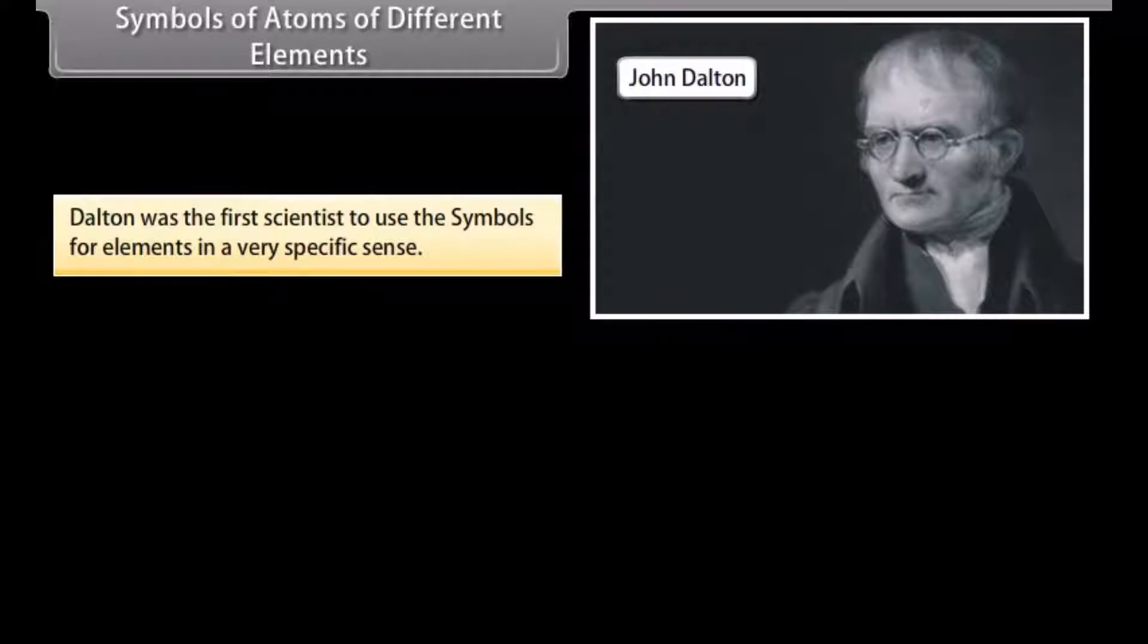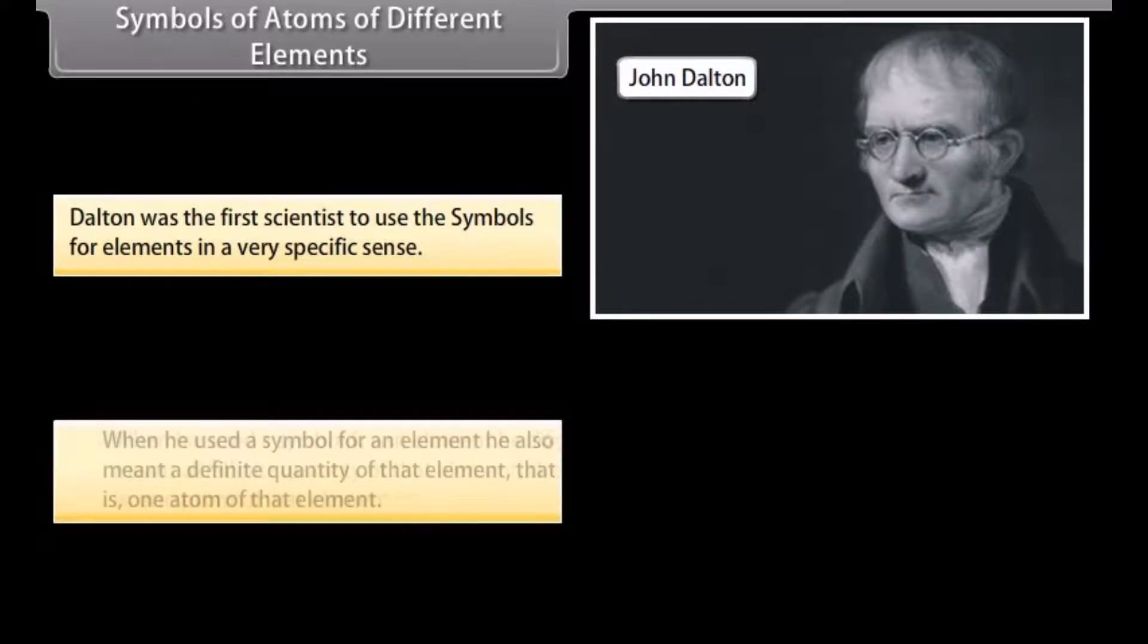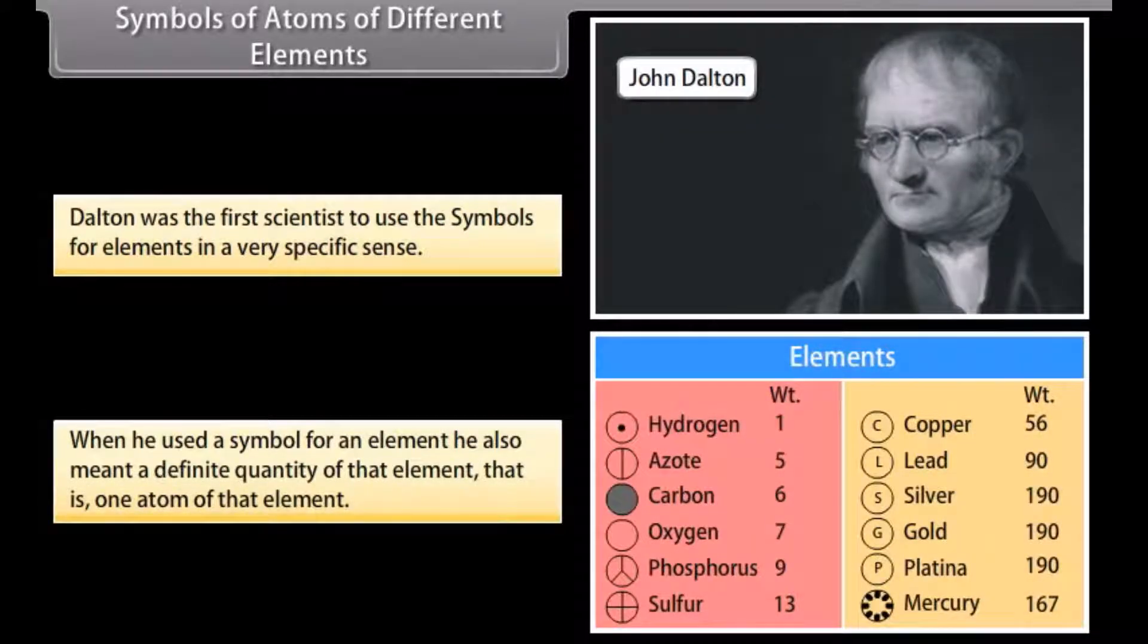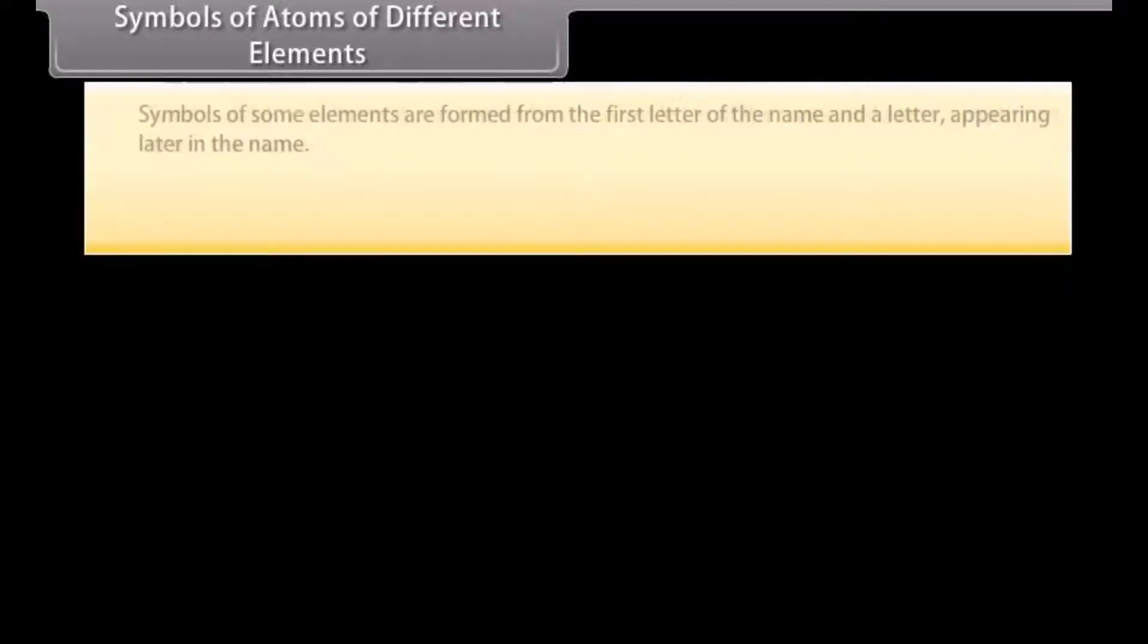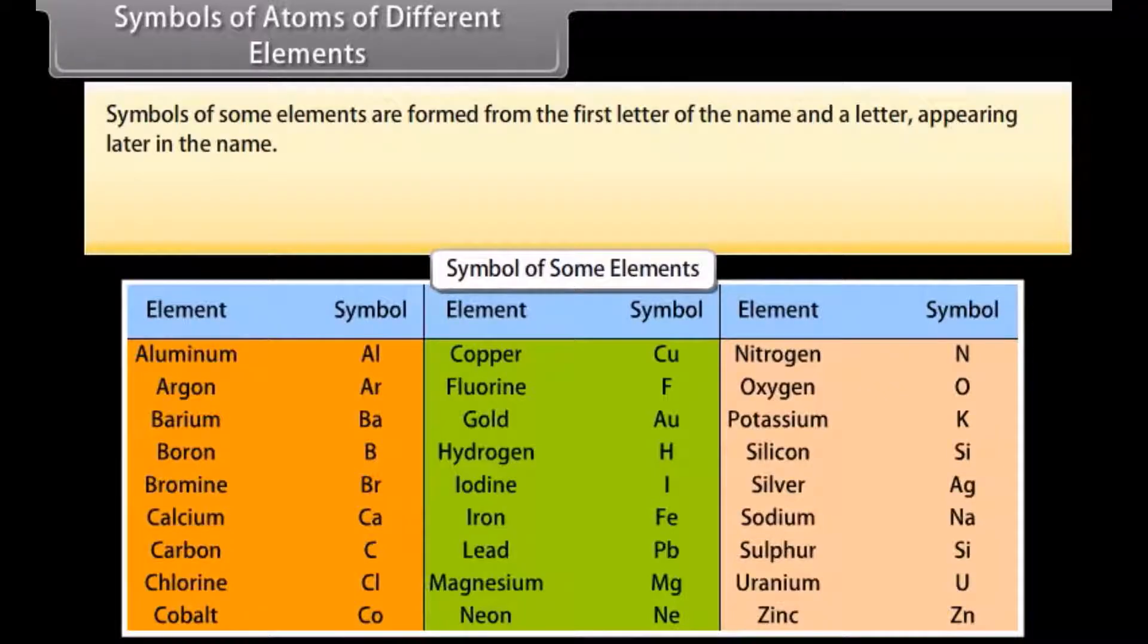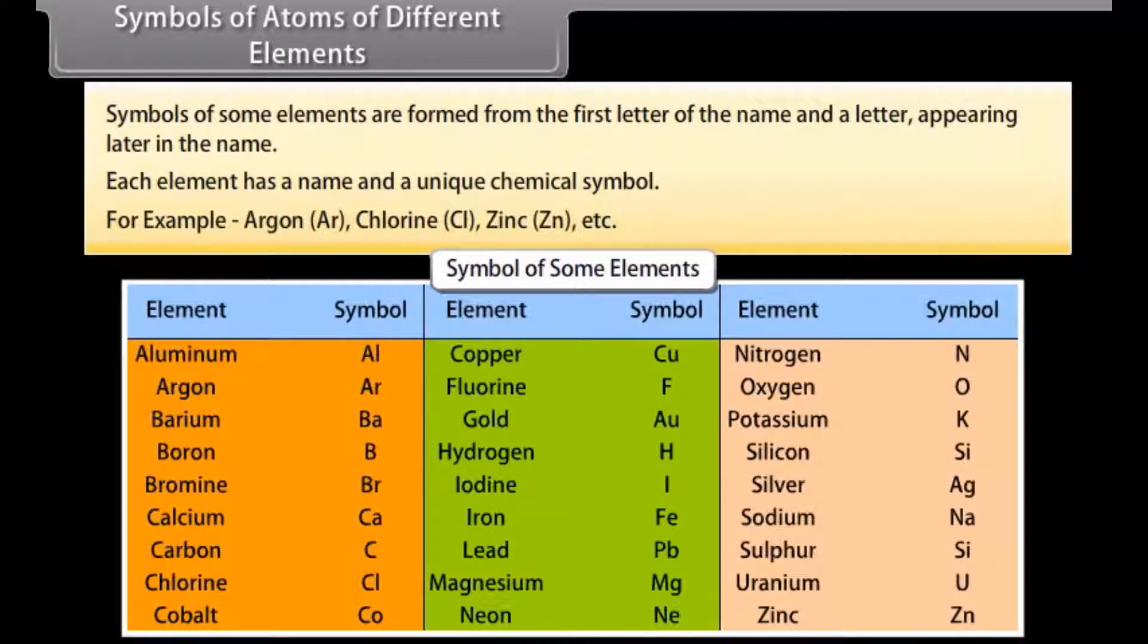Symbols of atoms of different elements. Dalton was the first scientist to use the symbols for elements in a very specific sense. When he used a symbol for an element, he also meant a definite quantity of that element, that is, one atom of that element. Berzelius suggested that the symbols of elements be made from one or two letters of the name of that element. Symbols of some elements are formed from the first letter of the name and the letter appearing later in the name. Each element has a name and a unique chemical symbol, for example, argon Ar, chlorine Cl, zinc Zn, etc.